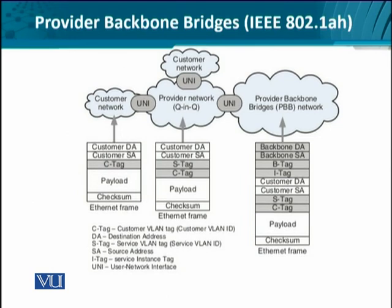Looking at the figure, we see multiple customer networks connected to each other through a provider network. The provider networks are connected to each other via the provider backbone bridge network, which uses additional information like the I-tag, as well as a B-tag — the backbone tag — which identifies the backbone itself. The overall header now includes two MAC address pairs for both customer identification and backbone endpoint identification, along with the C-tag, S-tag, I-tag, and B-tag.